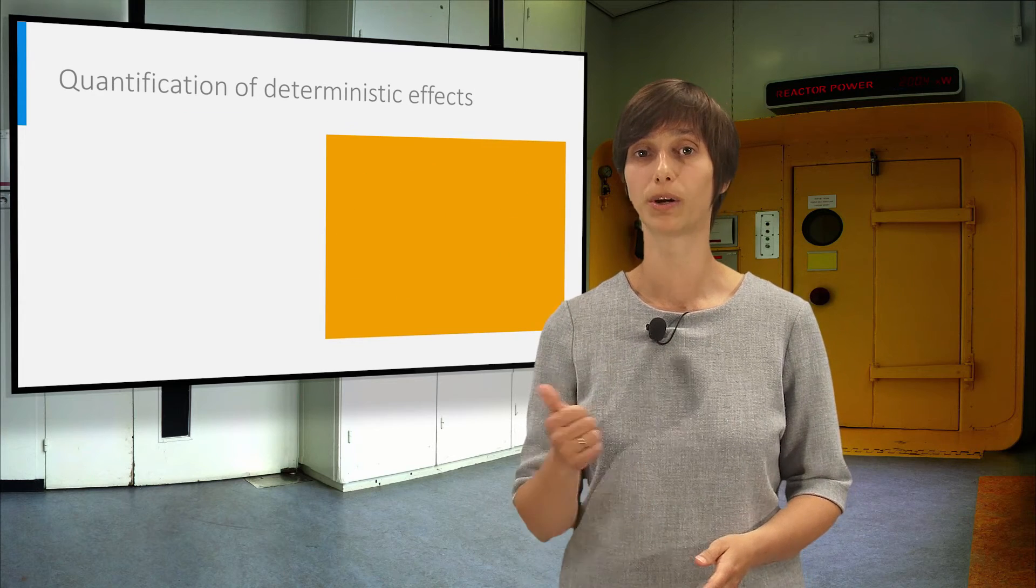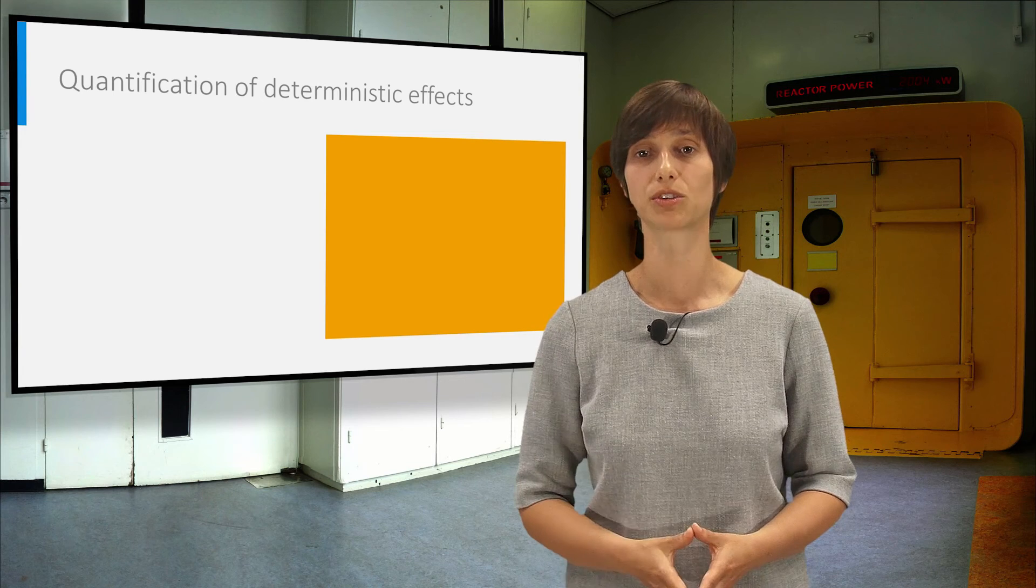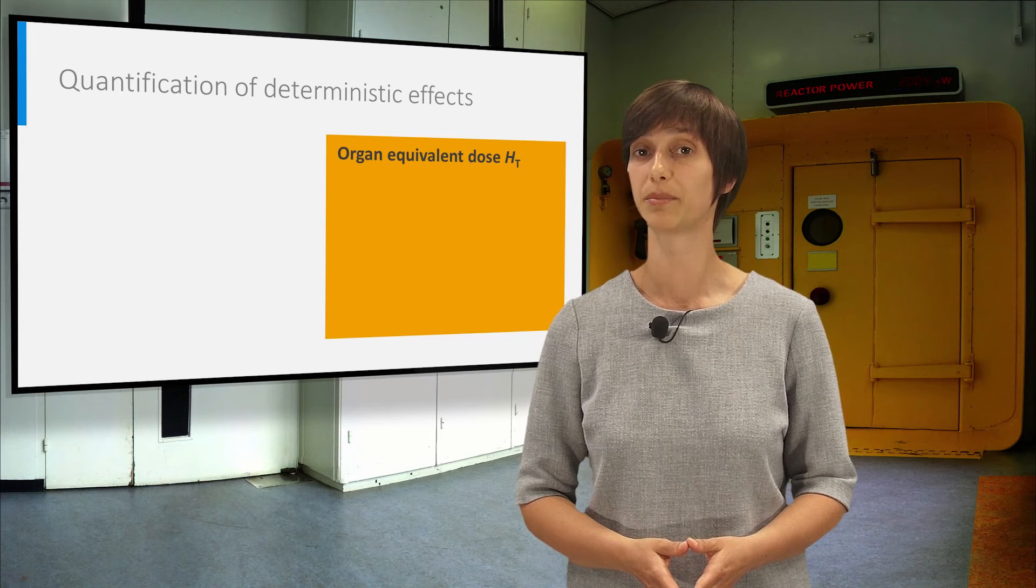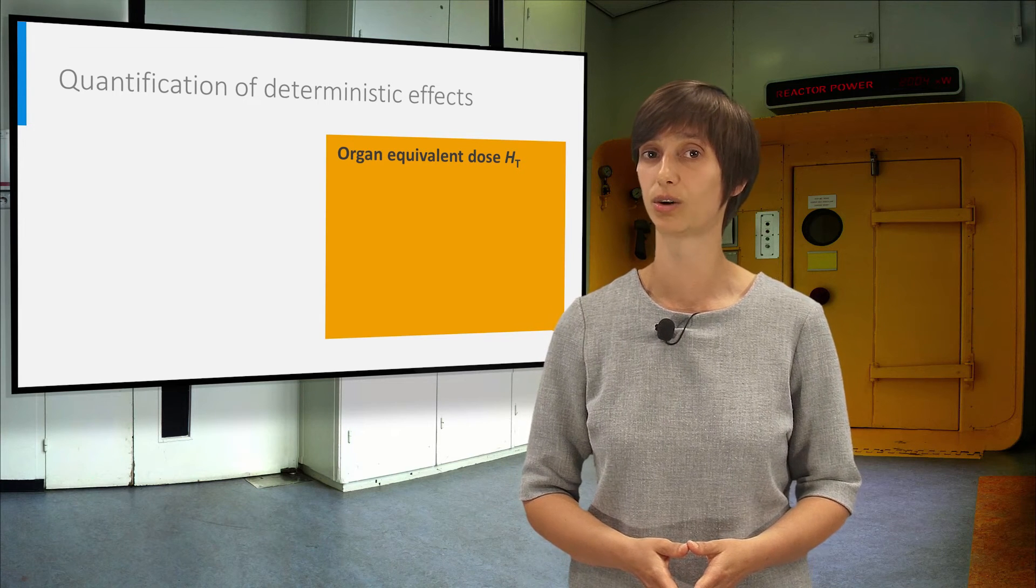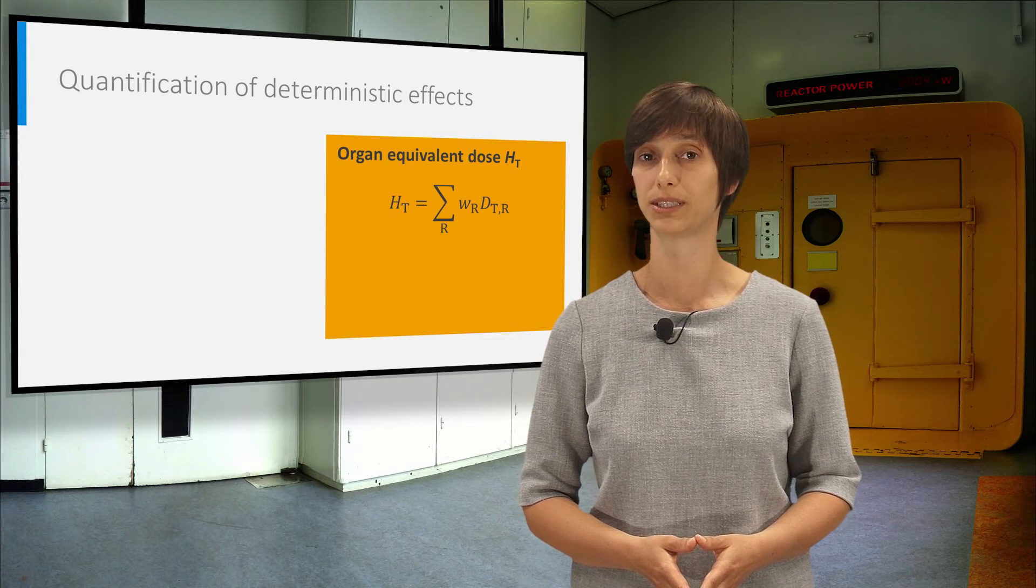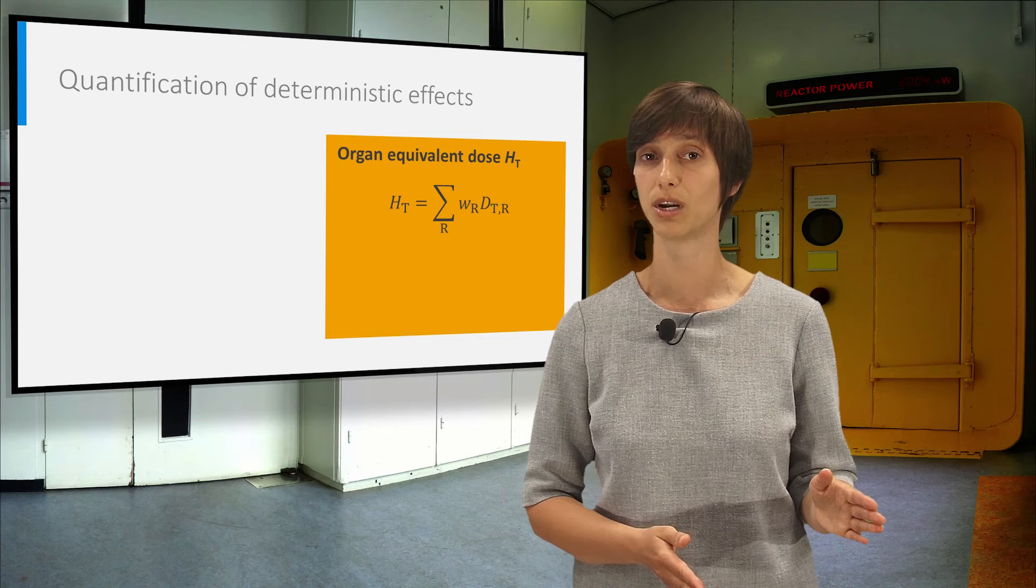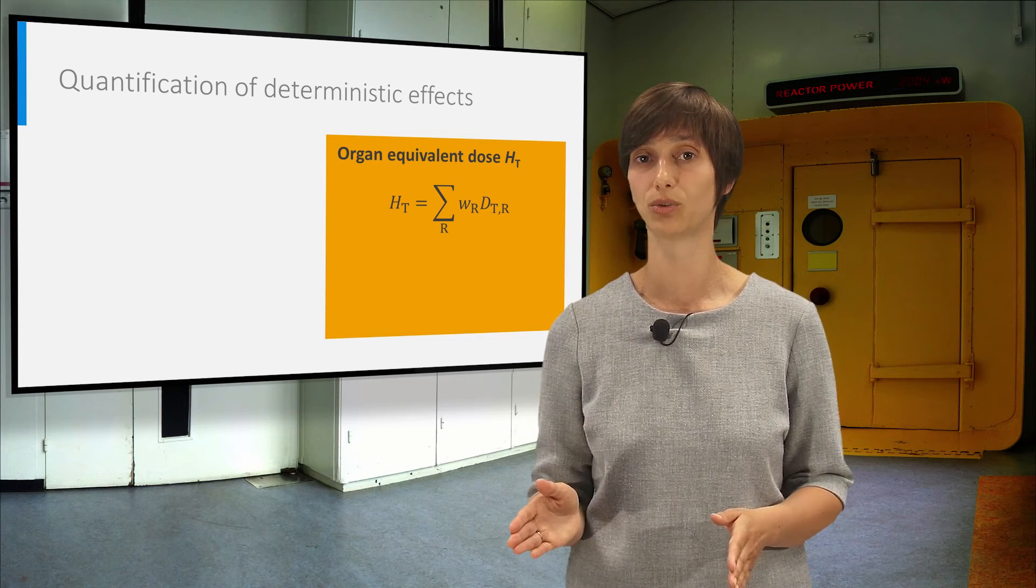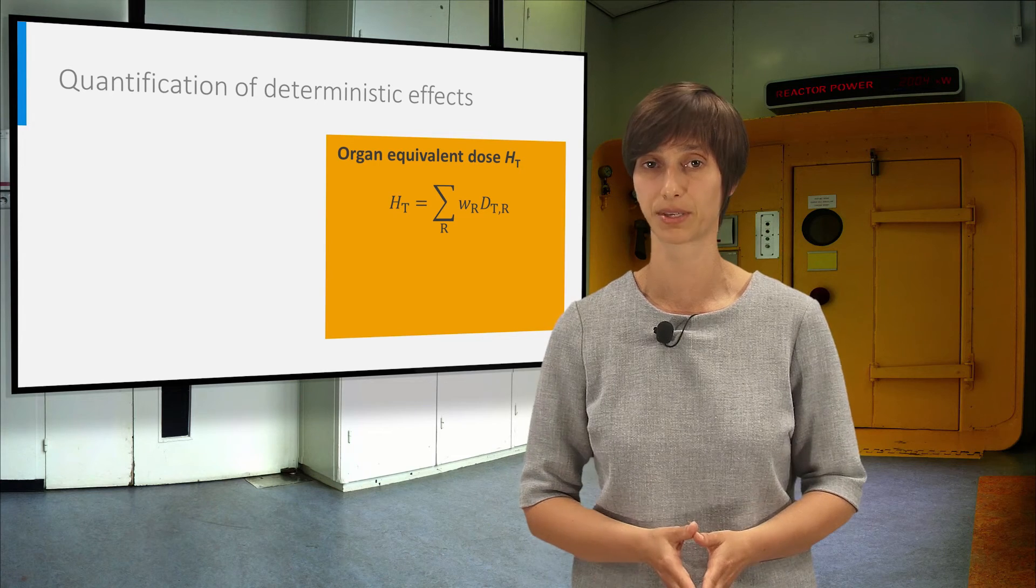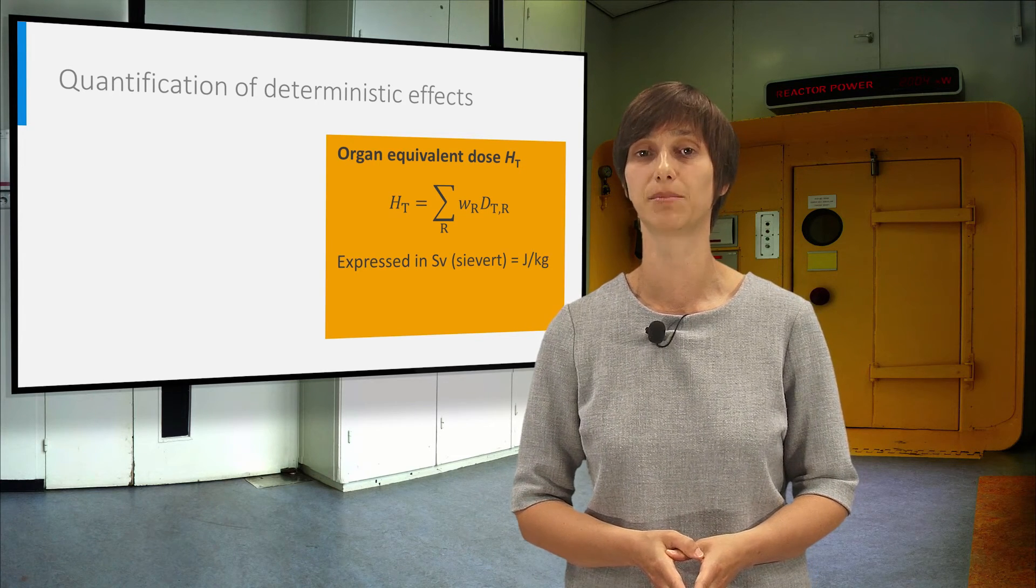Now, with the organ-absorbed dose, the radiation and tissue weighing factors, we can construct the two main quantities of radiation protection dosimetry. The deterministic effects in a tissue T are quantified by the organ-equivalent dose. This first quantity is calculated by multiplying the organ-absorbed dose for a tissue T with the radiation weighing factor, and sum the contributions for the different radiation types. It is expressed in joule per kilogram, and it has been given the special name Sievert.